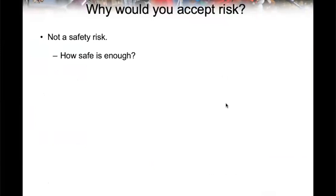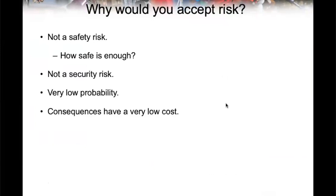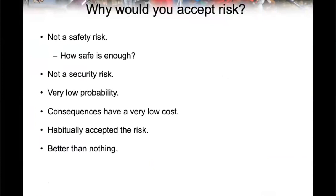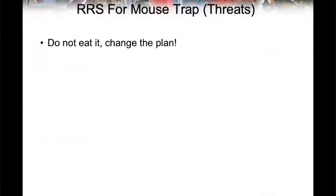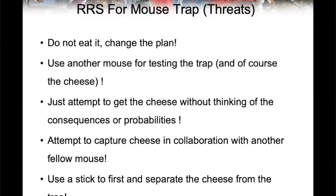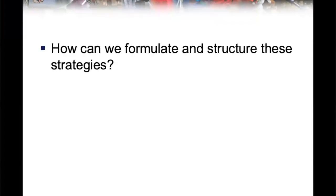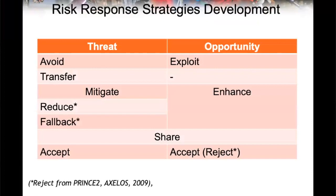Why would you accept risk? Sometimes we accept risk because it's not a safety or security risk — it's very low probability, like a tire hitting us. That's why I don't care about it. Maybe we have a risk appetite for historically accepting certain risks. But how can we formulate and structure these strategies? Use a stick, collaborate with another mouse, or use another mouse for testing the trap. These are risk response strategies — the third step — and we will cover them in a scenario next time.